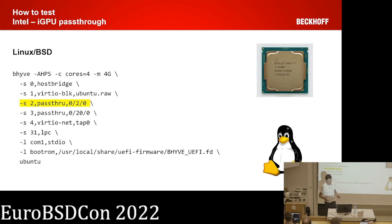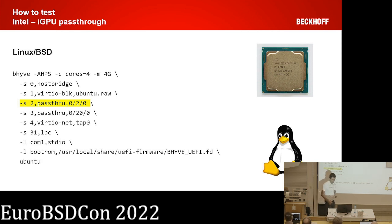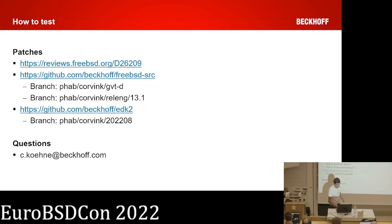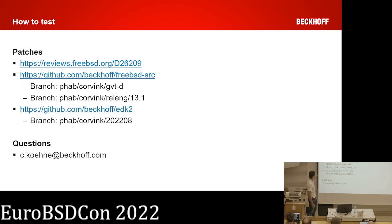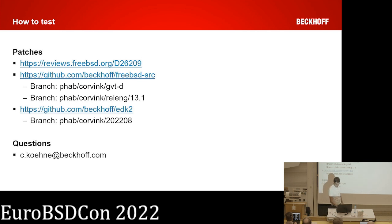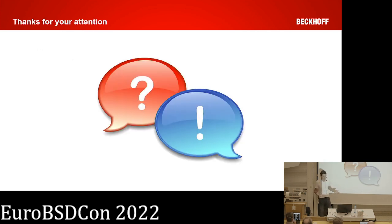The Intel Linux and BSD side is easier — you can attach the Intel GPU as a pass-through device normally and it works on upstream. As a short summary, if you want to test all of this, first take a look at my Phabricator patch, then check our Beckhoff GitHub repository for FreeBSD and edk2. If you have questions you can also email me. Thank you for your attention.